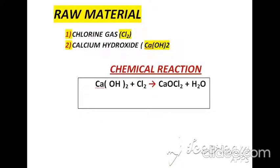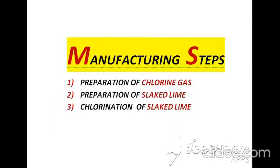Bleaching powder has two types of raw materials: the first one is chlorine gas and the second one is calcium hydroxide. You can observe the chemical reaction, and the main product is bleaching powder which is Ca(OCl)₂. Manufacturing of bleaching powder has three manufacturing steps.